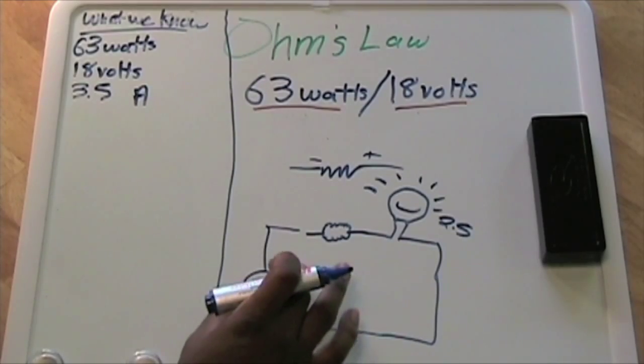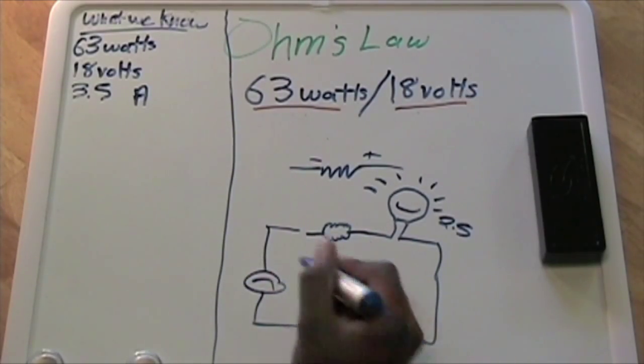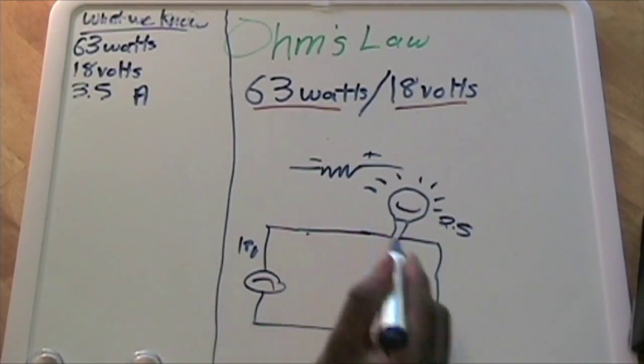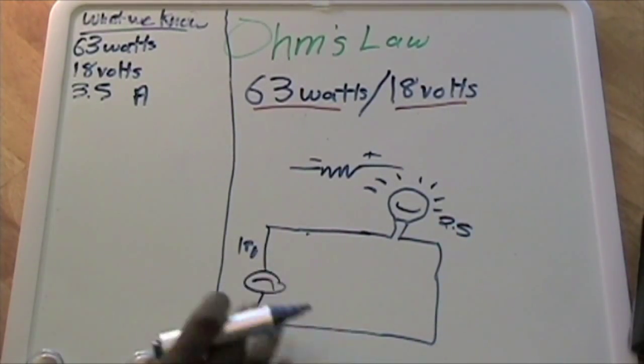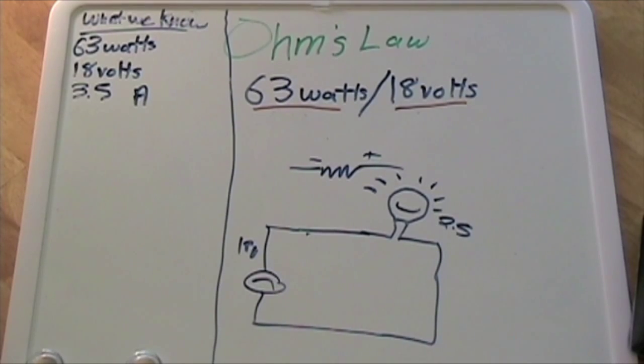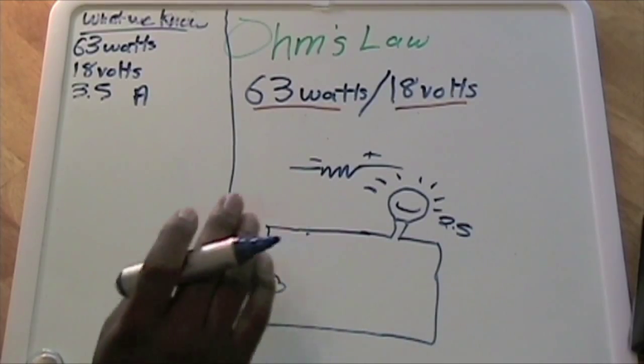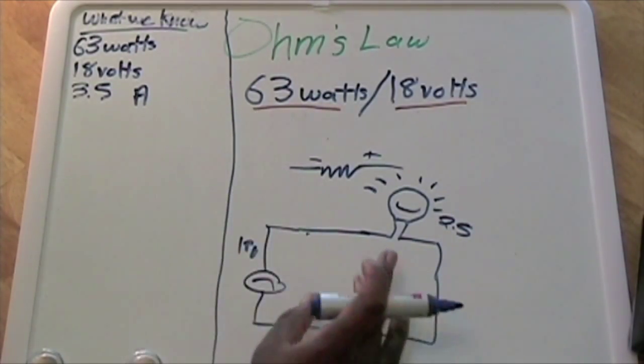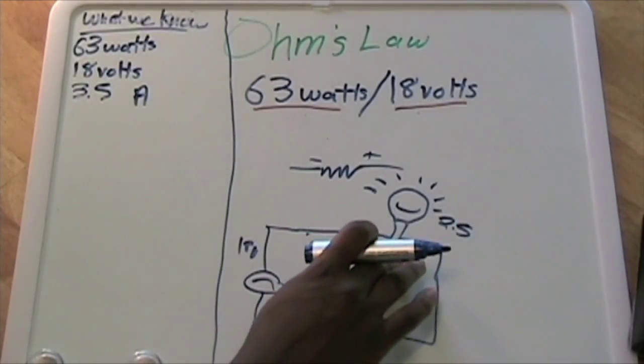If I didn't have this resistor here and my source of energy was producing, say, 18 volts, and I turned this whole circuit on, it would basically blow my LED and I'd just have a dead LED. The way we protect it is there's sites and different calculation tools you can use to find out how many ohms you need.